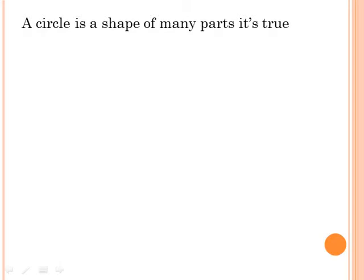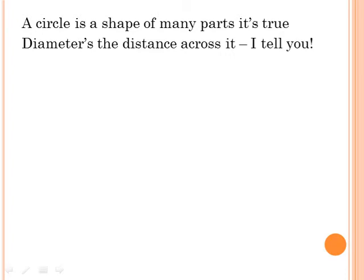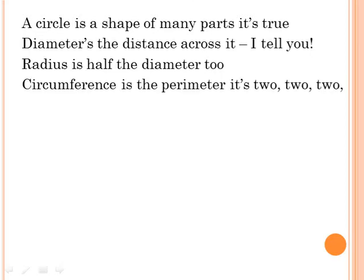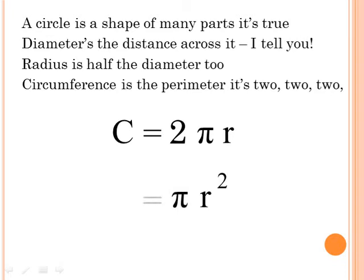A circle is a shape of many parts, it's true. Diameter's the distance across it, I tell you. Radius is half the diameter too. Circumference is the perimeter — two times pi times r is circumference, and pi times r squared is the area of a circle.